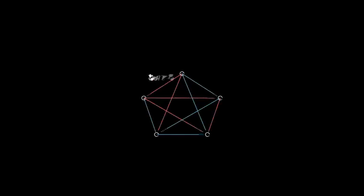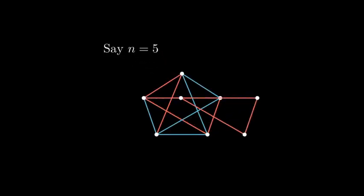Suppose we have a certain number of colors and a natural number k, then there exists a natural number n such that an n complete graph will have a clique of size k. In other words, a monochromatic k complete subgraph.